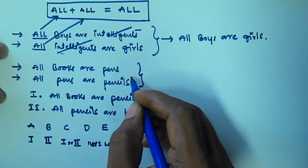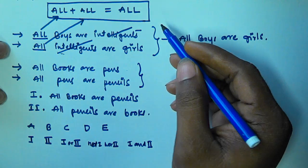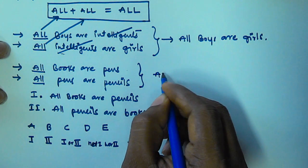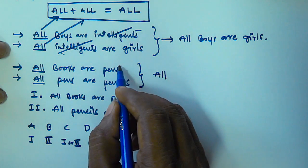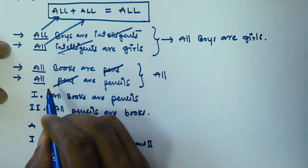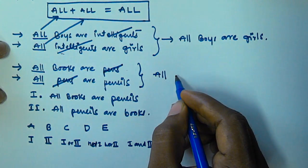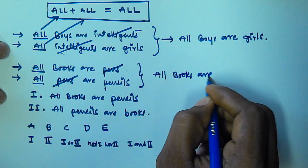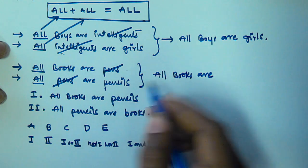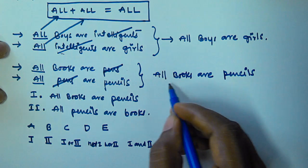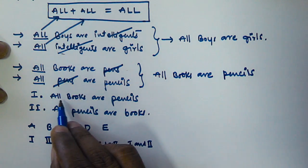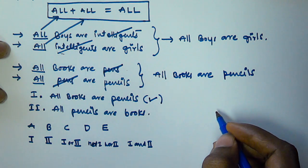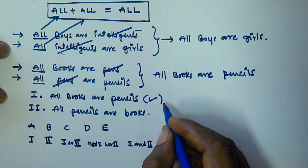From the given two syllogisms, using the all plus all is equal to all rule — the first syllogism starts with all, the second also starts with all, so the conclusion starts with all. The predicate of the first syllogism equals the subject of the second, so we cancel both. We take the subject from the first — books — and the predicate from the second — pencils. So all books are pencils, meaning conclusion 1 is true.